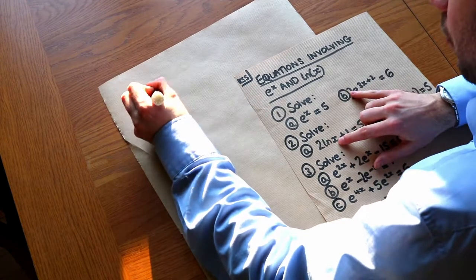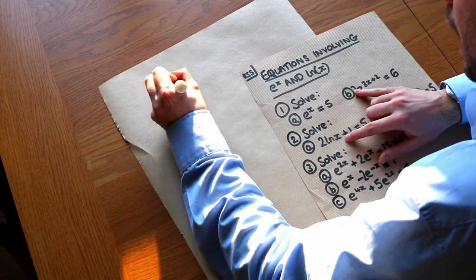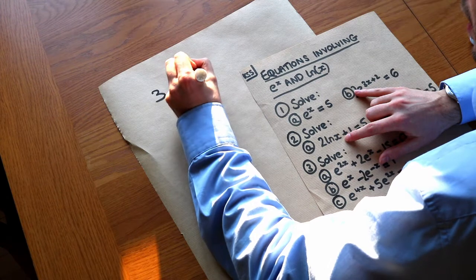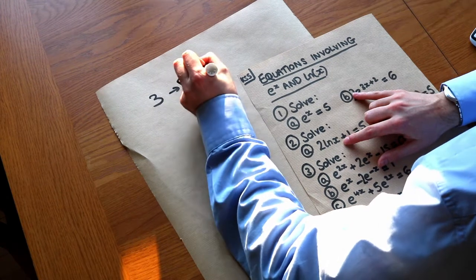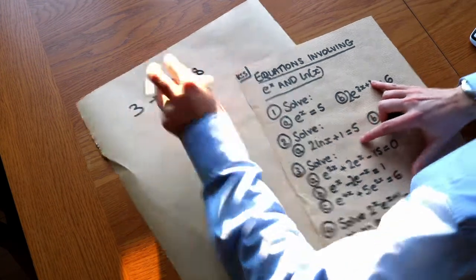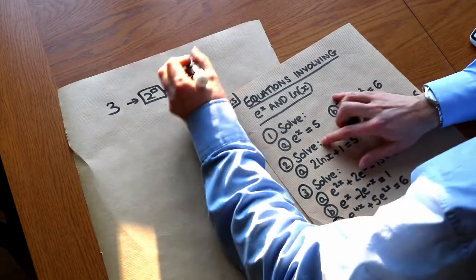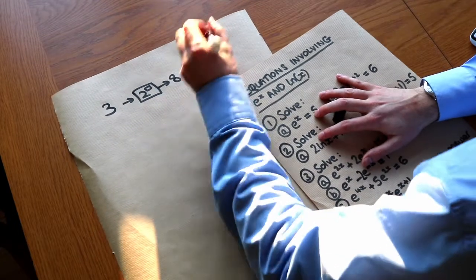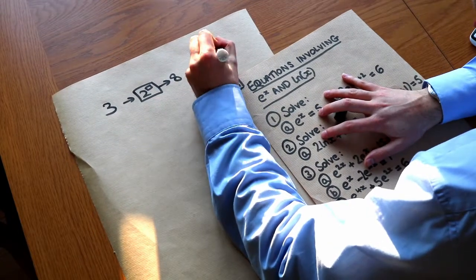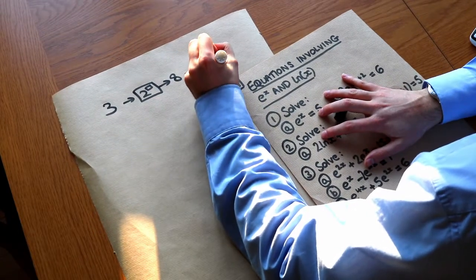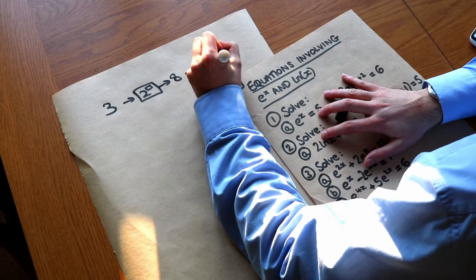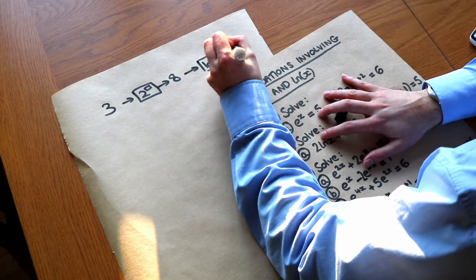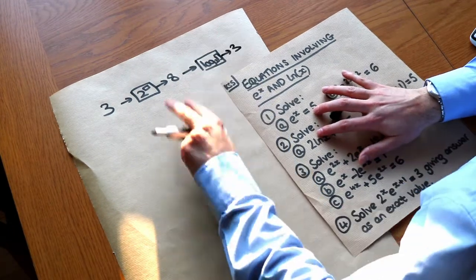So for example if I had 3 and then I did 2 to the power of 3, that would give me 8. And then we saw that to undo that '2 to the power of', we would do log base 2 of that number. So we do log base 2 of 8, which gets us back to 3.